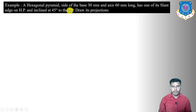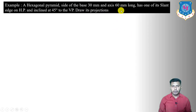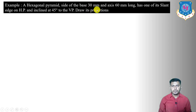This example is going to be done in three different stages. To derive the first stage, we first have to find out the resting condition — that means whether the solid is resting on HP or on VP — and then assume suitable conditions to derive the first stage.